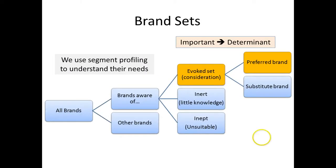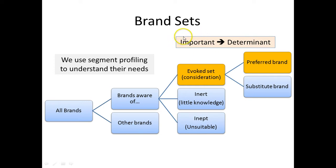Another way of thinking about it is the traditional brand set classification scheme. We have what we call the evoked set or the consideration set — the brands that we will choose from. So if a brand or product has the necessary important attributes, just like our hotel example, then we rely on determinate attributes to choose which one we will buy and which ones we will perhaps save for later.